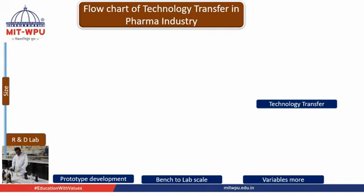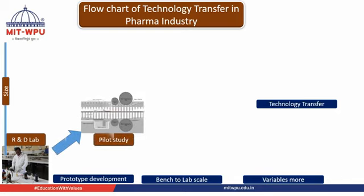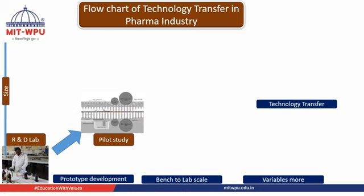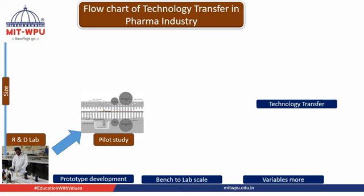Once you finalize your formula and finalize your process, then it has to go to the pilot plant study, where we materialize the batches — improved by maybe 10-fold — where we understand the process at a larger scale. That is called a pilot study. Pilot study is very important; it has to always be carried out in more batches as compared to R&D labs.